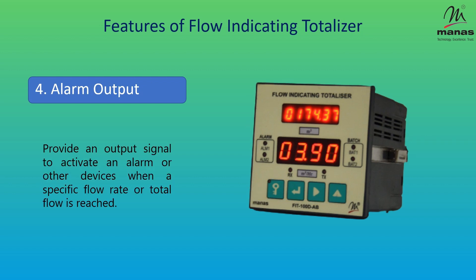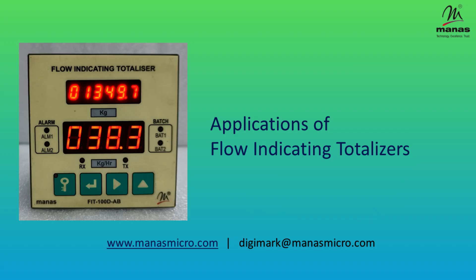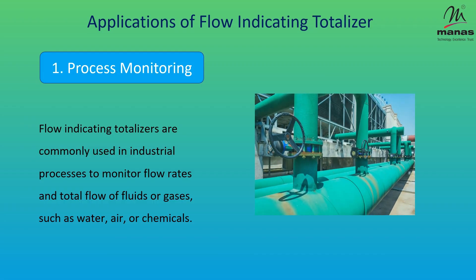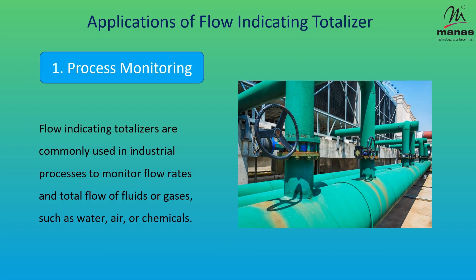Alarm output — it can provide an output signal to activate an alarm or other devices when a specific flow rate or total flow is reached. The applications of a flow indicating totalizer include process monitoring: flow indicating totalizers are commonly used in industrial processes to monitor flow rates and total flow.